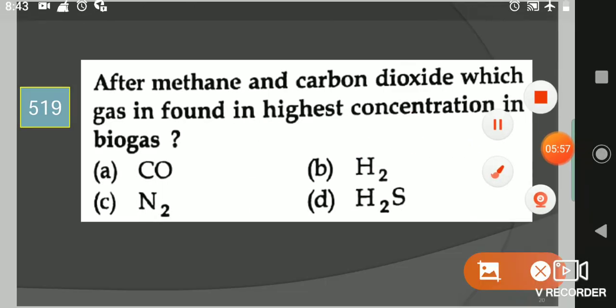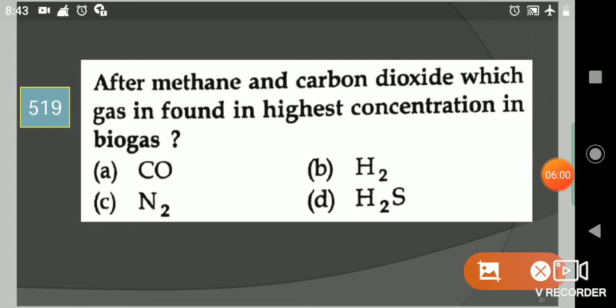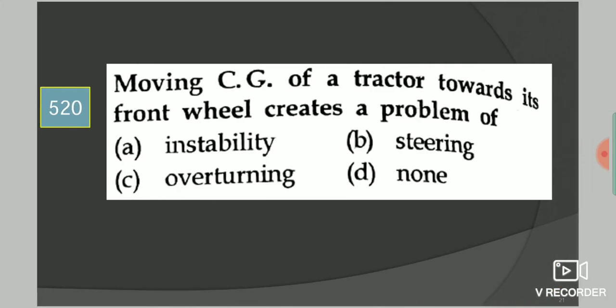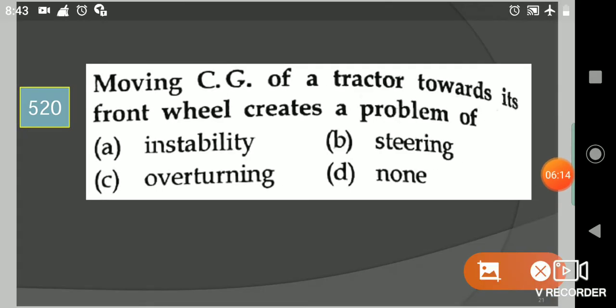Next question: After methane and carbon dioxide, which gas is found in highest concentration in biogas? Your options are carbon monoxide, hydrogen, nitrogen, H2S. Your answer is option B, hydrogen H2.